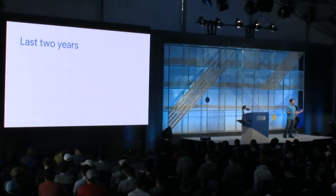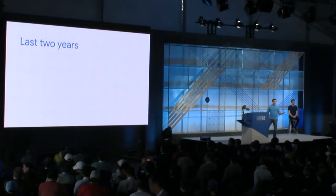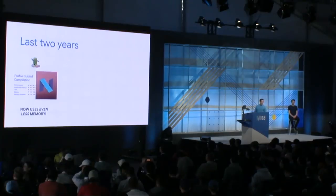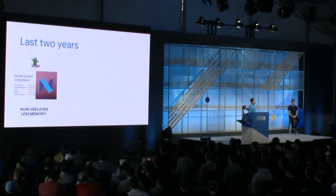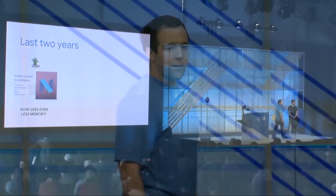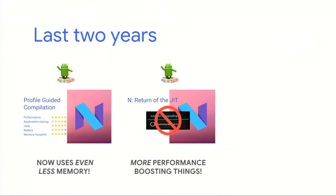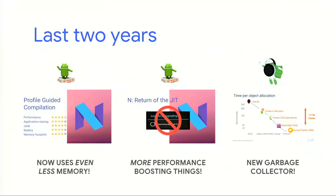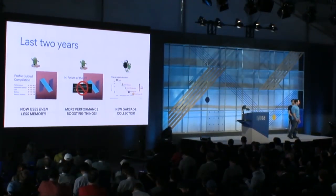Now let's look at how ART has changed over the last few years. In Nougat, we introduced profile-guided compilation to improve application startup time, reduce memory usage, and reduce storage requirements. Also in Nougat, we added a JIT, much like Dalvik used to have, to remove the need for optimizing apps during Android system updates. In Oreo, we added a new concurrent compacting garbage collector to reduce RAM requirements, have less jank, and accelerate allocations. This new garbage collector enabled a new bump-pointer allocator that is 17 times faster than the allocator in Dalvik or KitKat.